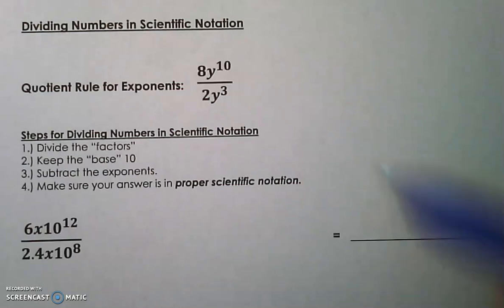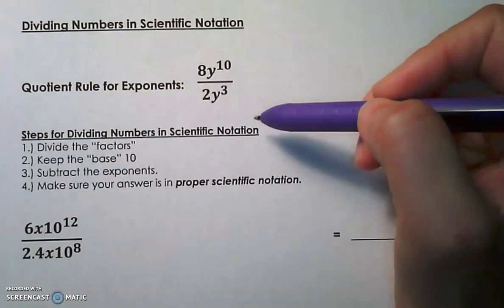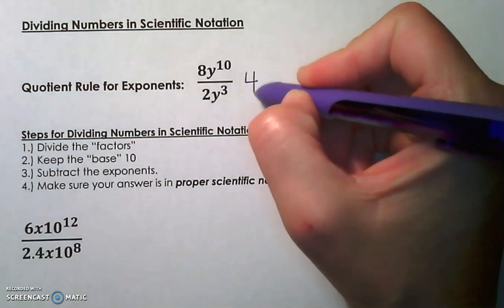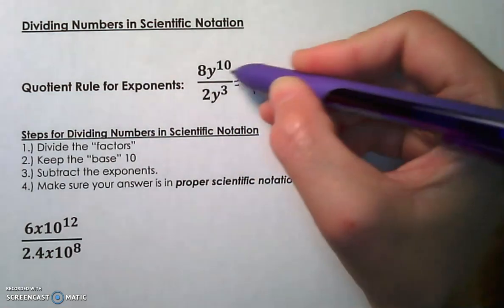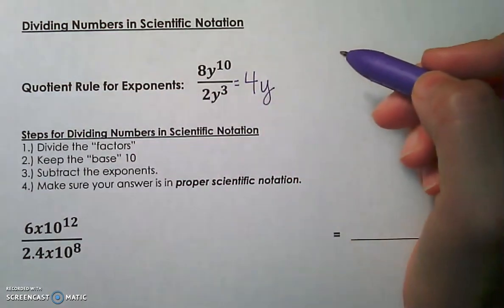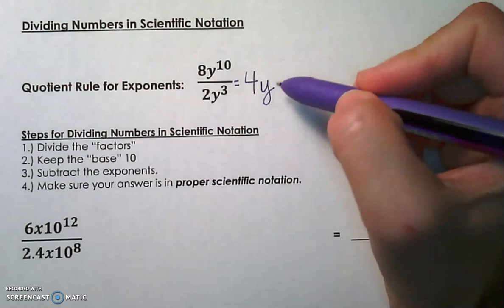The quotient rule tells us that if we have any coefficients, we would divide those just like a regular fraction. 8 divided by 2 is 4, and then we are going to keep the base of y.